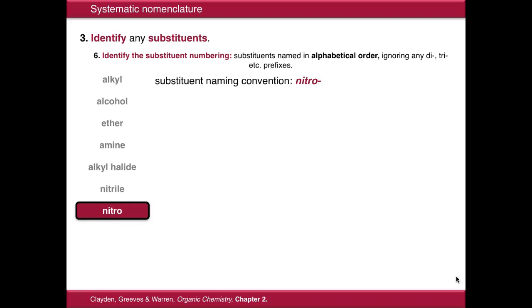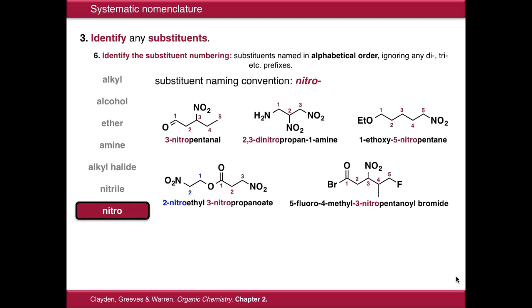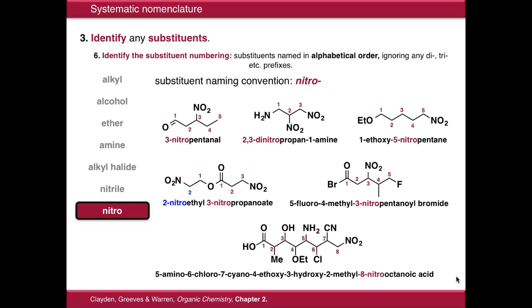Nitro groups are simply named nitro, and again just indicate their position in the molecule with numbers. Here's a final example of how to format and assemble your names — notice that everything is still in alphabetical order, not in number order, including all of the groups we've seen previously.